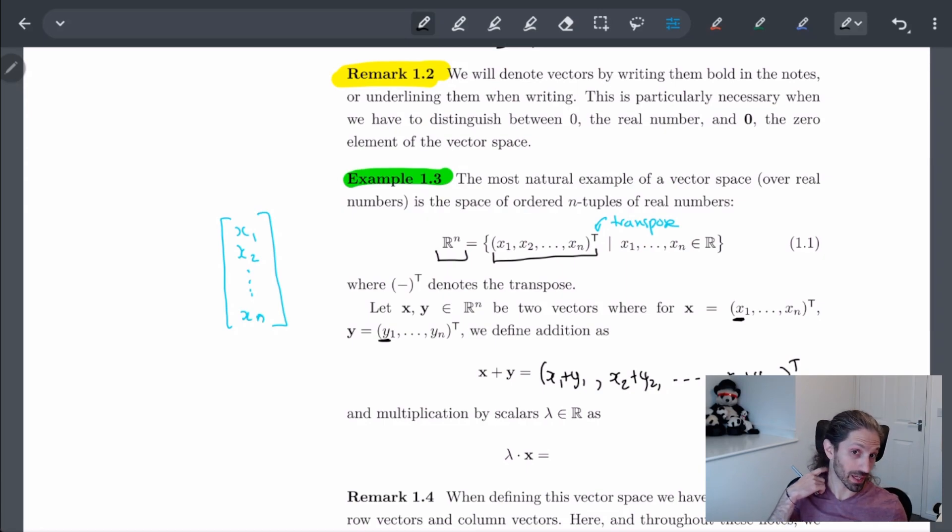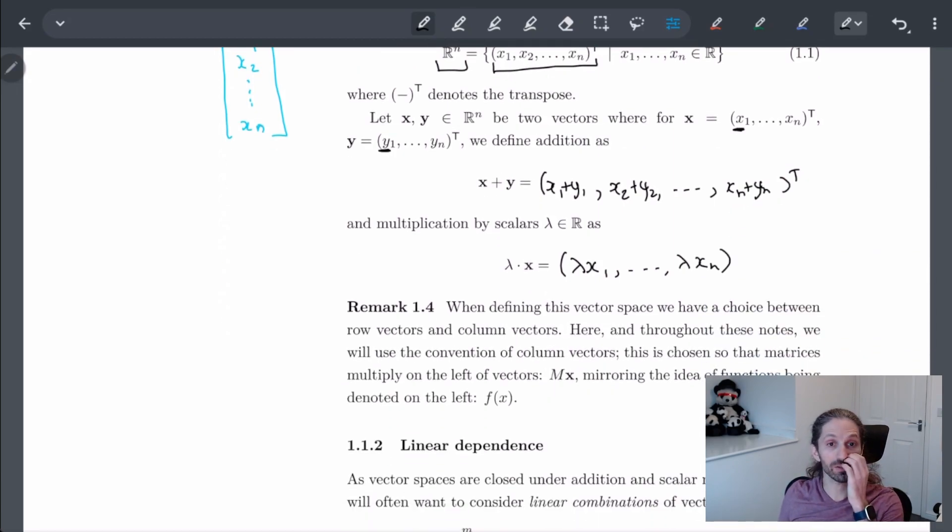Similarly, with scalar multiplication, we're going to allow this scalar to multiply all of the numbers. So if I want to increase the length by, like, make it two times longer, I have to increase all of the components by two. So here, we would get lambda x1 all the way up to lambda xn. And so this is basically how we're doing this.